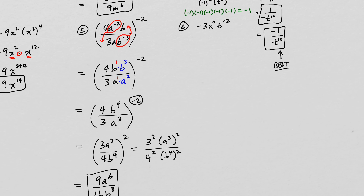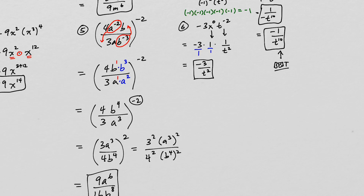For the last problem, we have negative 3 times x to the zero times t to the negative 2. First, x to the zero equals 1. Then t to the negative 2 is 1 over t squared. Negative 3 is the same as negative 3 over 1, and 1 is also 1 over 1. Multiplying these fractions together: negative 3 times 1 times 1 is negative 3, and 1 times 1 times t squared is t squared. One important note: you don't want to leave a negative exponent in your answer, so that's why t to the negative 2 is rewritten as 1 over t squared.